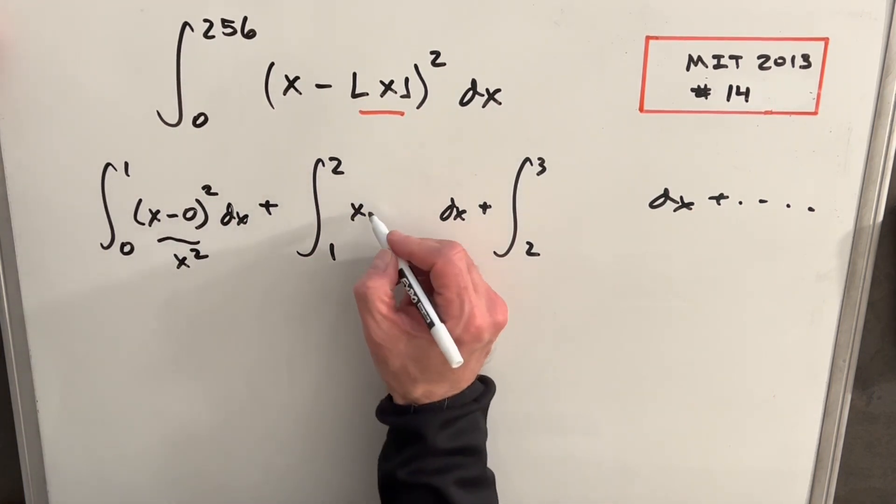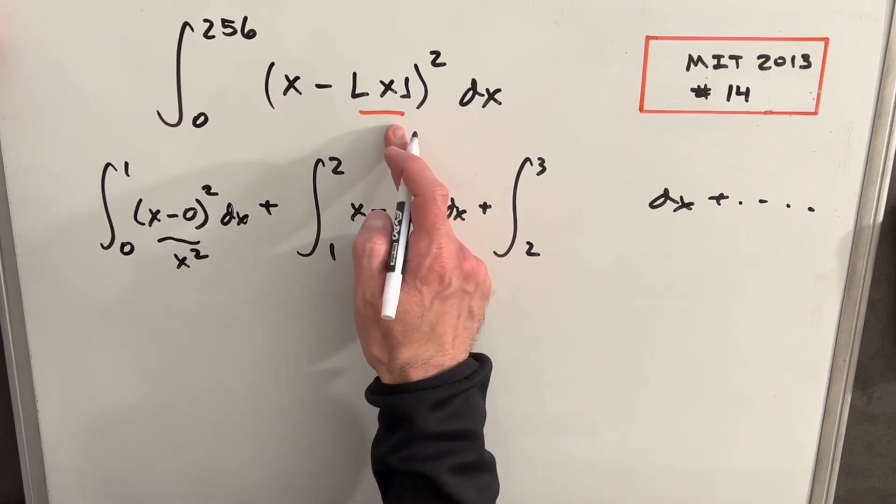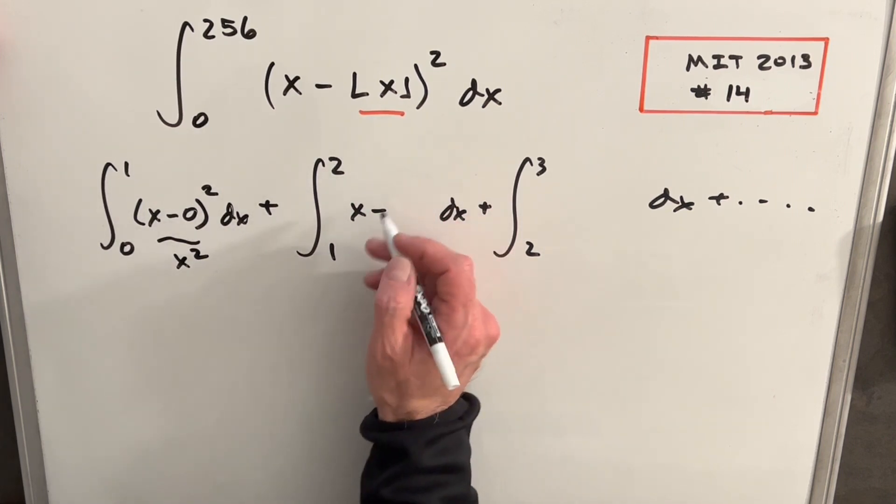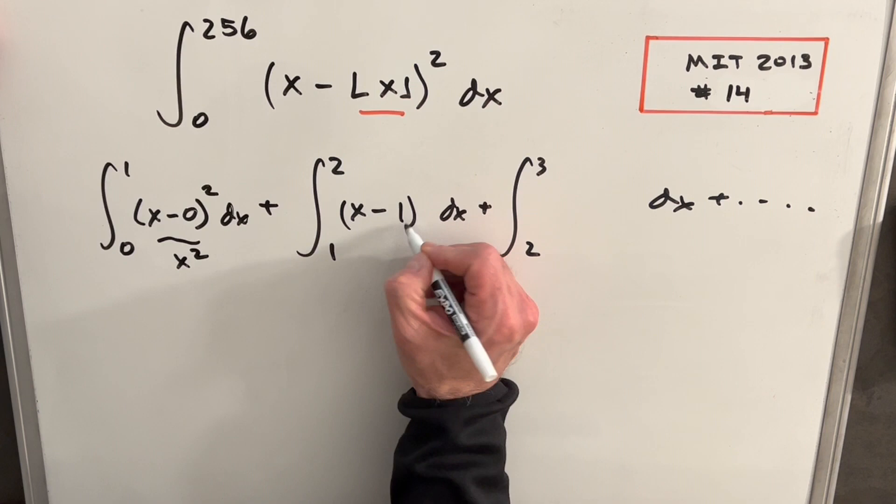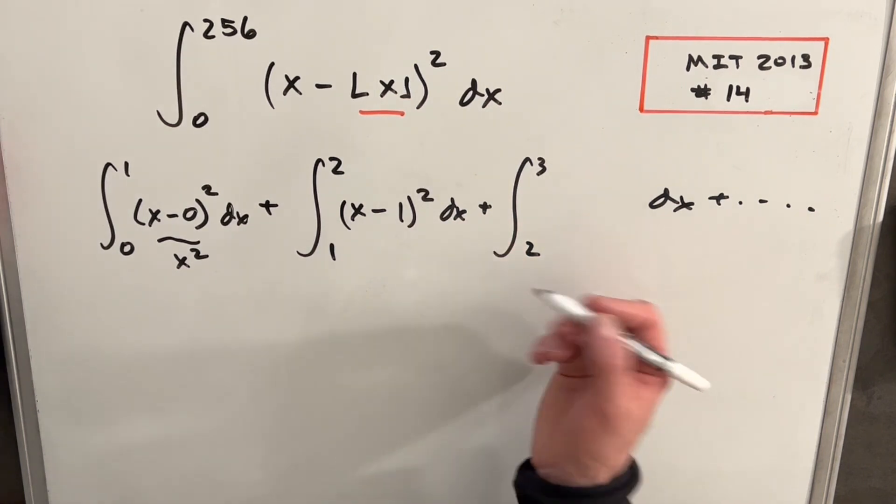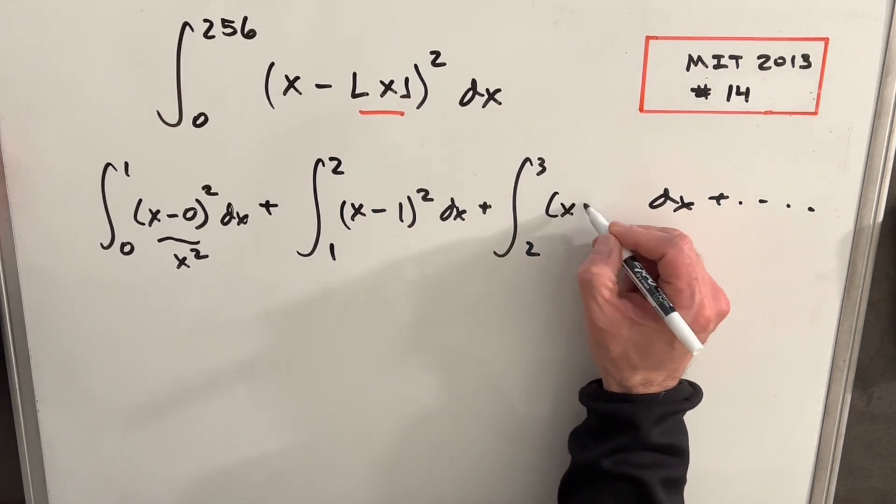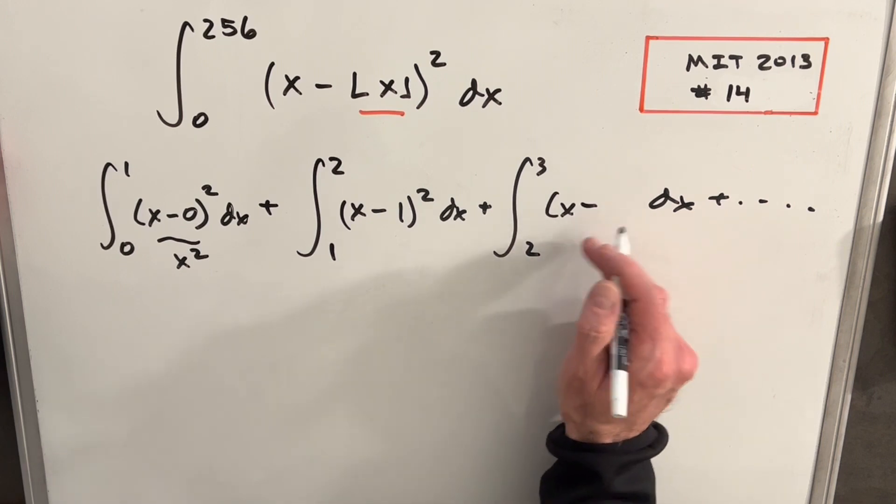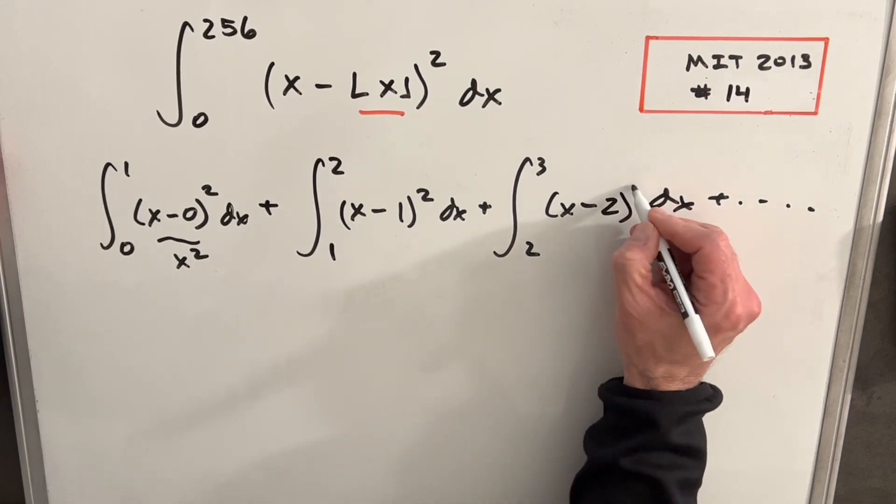Now let's go on to this next one. We're integrating x again as x. Our floor, between 1 and 2, the floor just takes it down to 1. So we're integrating x minus 1 squared. We can do the same thing again. We're going to have x minus the floor between 2 and 3. It's going to take it down to 2. So we're going to have x minus 2 squared.